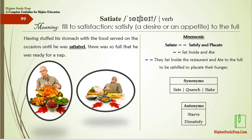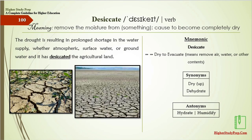Desiccate means to remove the moisture from something or to cause it to become completely dry. The drought has resulted in a prolonged shortage of water supply — whether atmospheric, surface, or groundwater — and has desiccated the agricultural land. Mnemonic: desiccate — dry; to evacuate means to remove air, water, or other content completely. The synonyms are dry up or dehydrate, and the antonyms are hydrate or humidify.